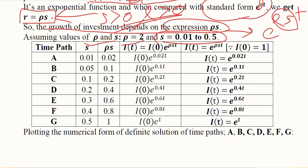We start it with 0.01 and increase it to the level of 0.5. This gives rise to seven values of s and hence seven time paths depending upon the value of ρs.